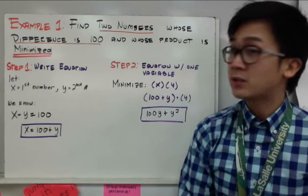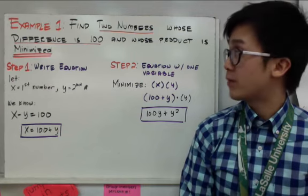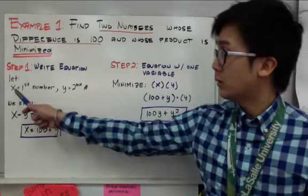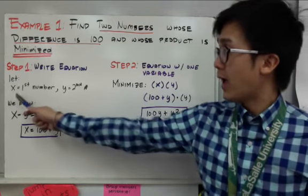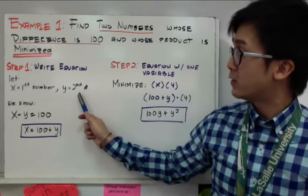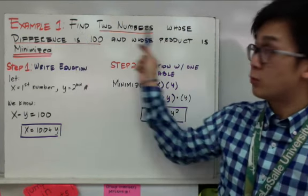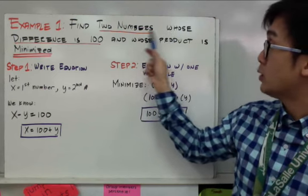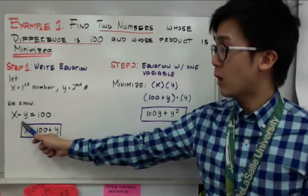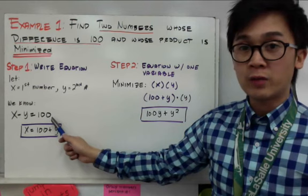We're going to answer this problem using derivatives. The first step is to write our equation based out of the problem. The first two numbers that we're looking for will be x and y. x will be your first number, and y will be our second number. To write out the equation based out of the first part of the word problem, which is finding the two numbers whose difference is 100, can be shown as this: x minus y is equal to 100.